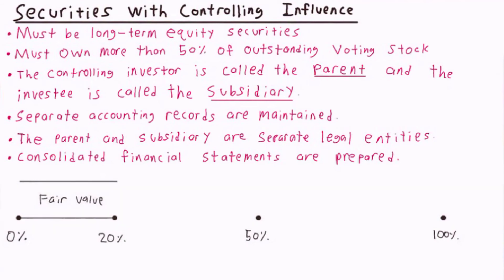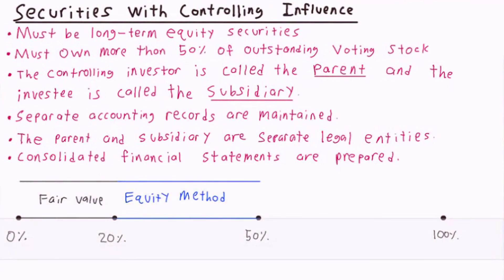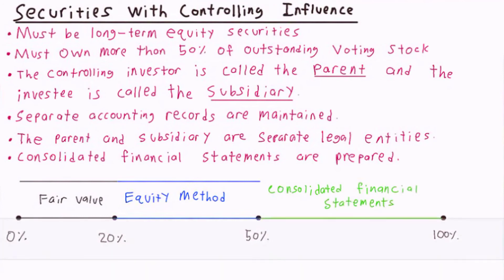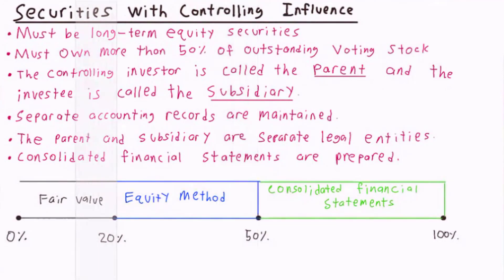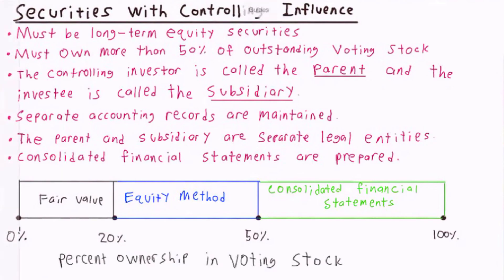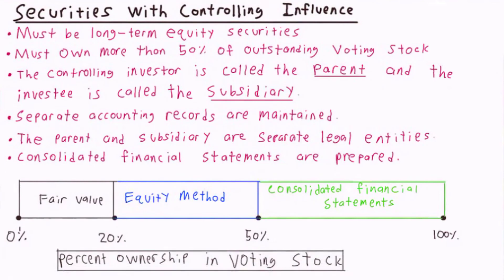Just to sum things up, here is a chart that shows the accounting method for equity investments based on percentage ownership. Equity investments ranging from zero to less than 20 percent ownership are reported at fair value. Investments with 20 to 50 percent ownership are reported according to the equity method. Investments with more than 50 percent ownership require consolidated financial statements to be prepared.